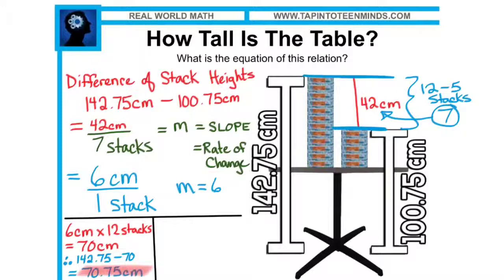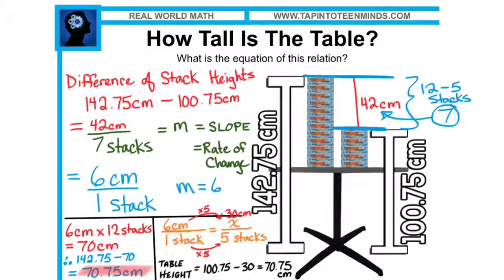We could also confirm this using the five stacks on the right side of the table, and we can even set it up slightly differently using some of our prior knowledge if we wish. Since we're dealing with a rate of change of six over one, it's only natural that we can actually set up a proportion showing our two rates six over one is equal to x over five. And since we know we have to multiply one stack by five to get five stacks, we'll have to do the same on the top, and we'll get a total of 30 centimeters for your five stacks. And thus we've confirmed once again that the table height must be 70.75 centimeters total.